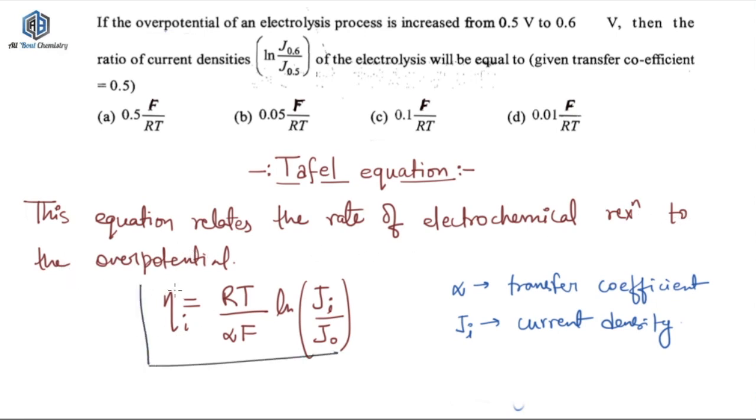This equation is given by eta i equals RT upon alpha F ln Ji by J0. Where R is your gas constant T is the temperature at which the reaction is happening. Alpha is your transfer coefficient whose value is given in the problem as 0.5. Then your F is Faraday constant, ln is log base e and that is natural log, and Ji and J0 are initial, final and initial current densities respectively. So this is the equation which will be used to solve this question.